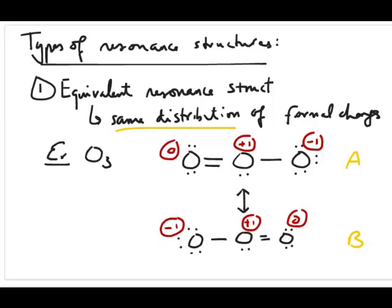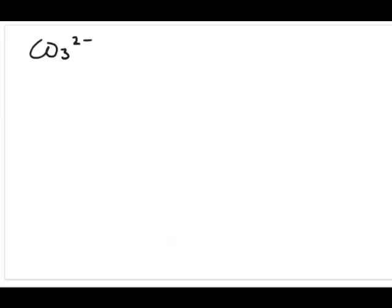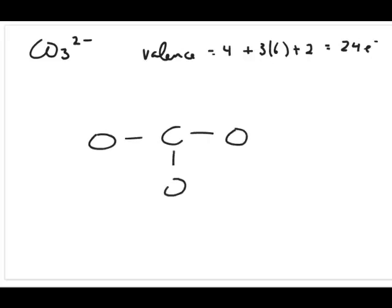Let me give you another example with two different types of atoms in an ion, which might give you a better feel for what I mean by the same distribution. Carbonate is a good example. For carbonate, you have a valence of four for carbon, three oxygens, and two more electrons for the negative charge, giving 24 electrons total. Carbon has to be the central atom, and with correct bonding you get one structure. Counting all electrons gives 24 total.